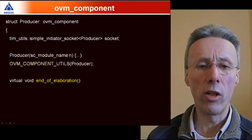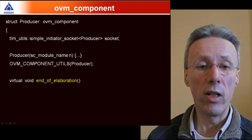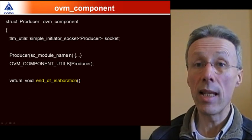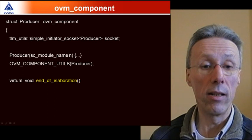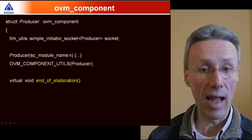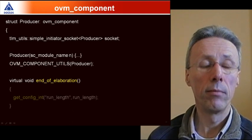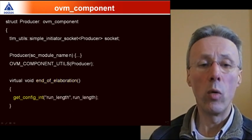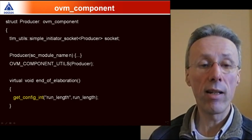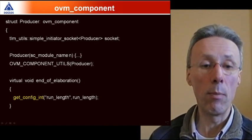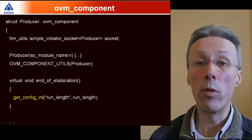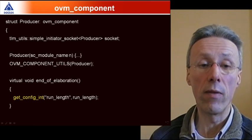Then comes end_of_elaboration. End_of_elaboration is kind of interesting because it's a callback that's common between the SystemC standard and the OVM standard. Both of those standards use the same name for this callback that's executed at the end of elaboration. The callback is making a call to get_config_int and get_config_int interrogates the OVM configuration table which is a table of configuration parameters that could be set from the top down within the verification environment.